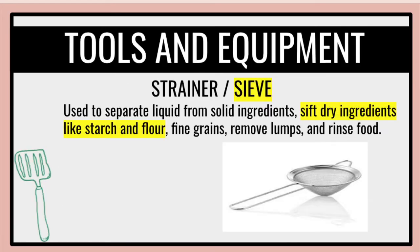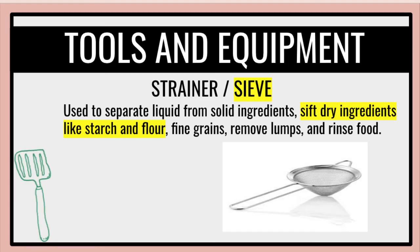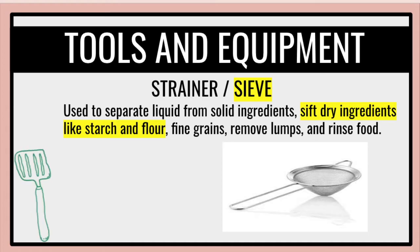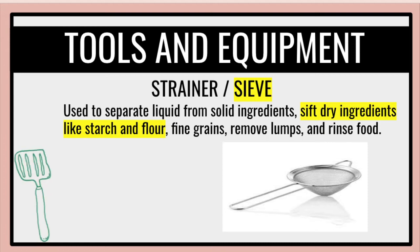Tools and equipment needed. We need to use a strainer or sieve. These are used to separate liquid from solid ingredients. You sieve dry ingredients like starch and flour. It removes lumps and rinses food as well. Your kitchen tool should always be handled with care when in use. Clean them with dishwashing liquid and running water to aid in the avoidance of contamination. Put them in proper storage after use to help maintain the life of your tools.